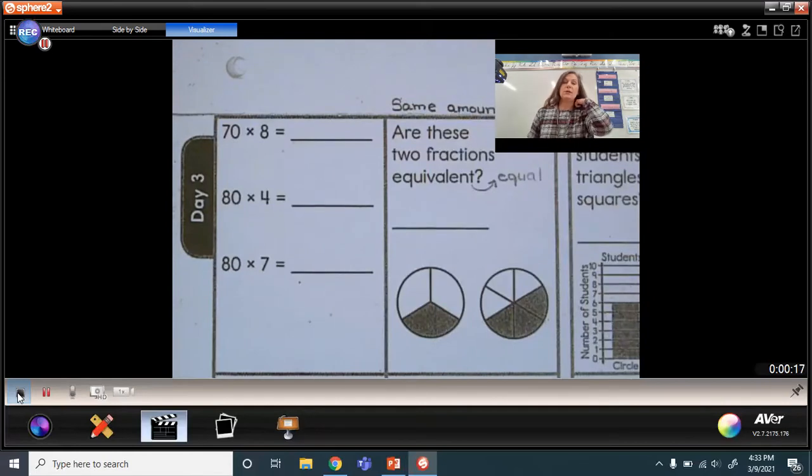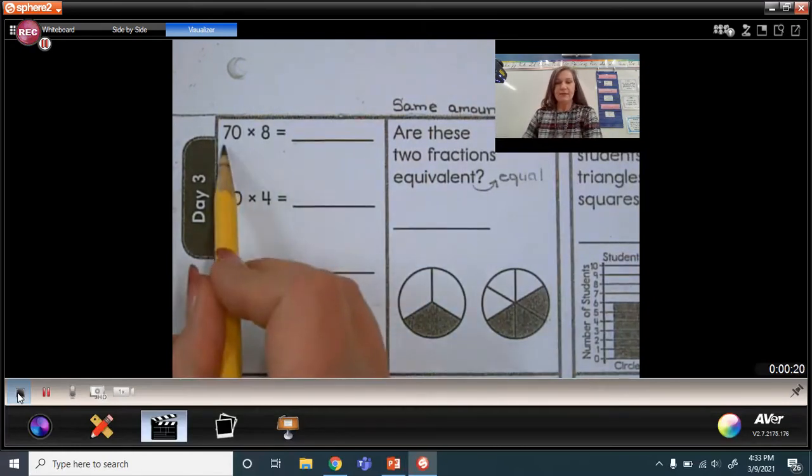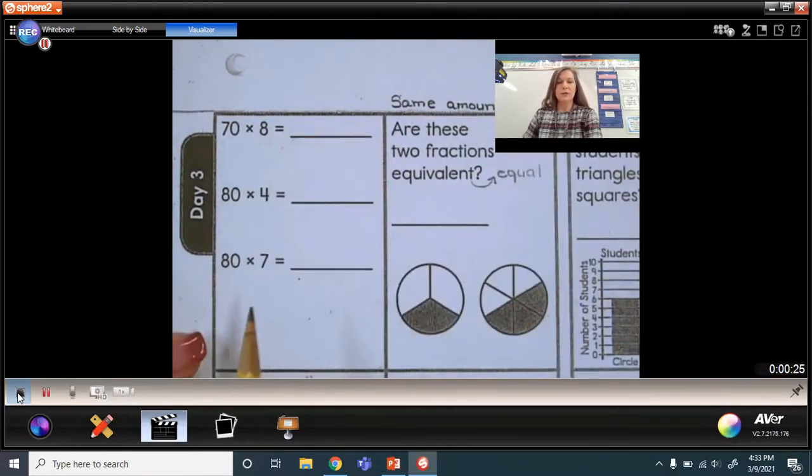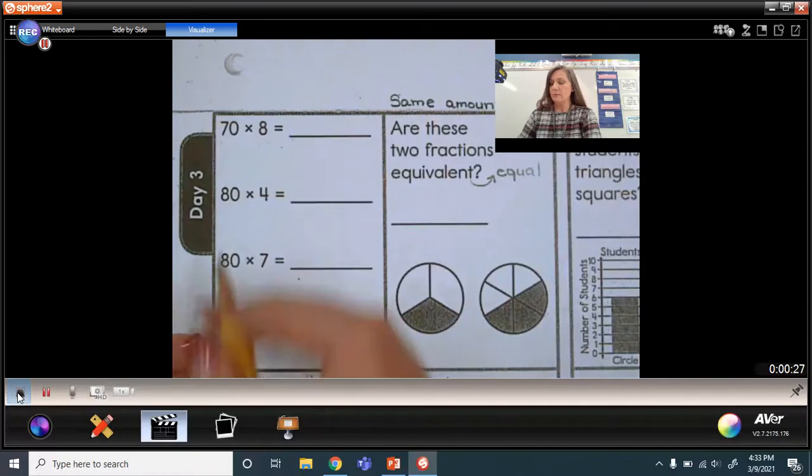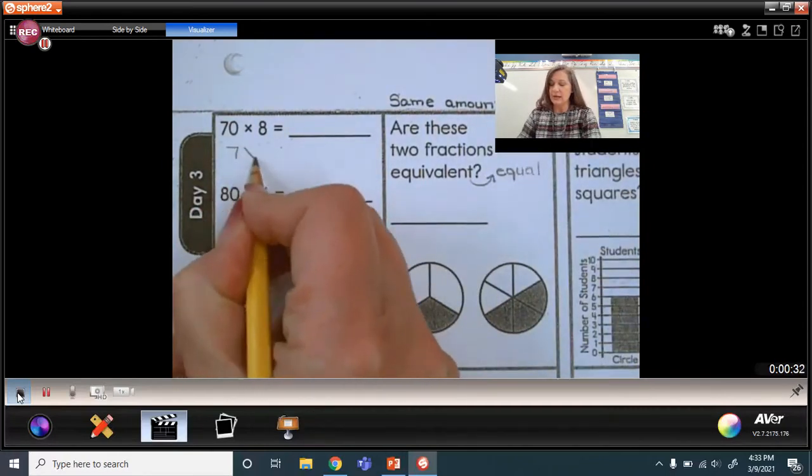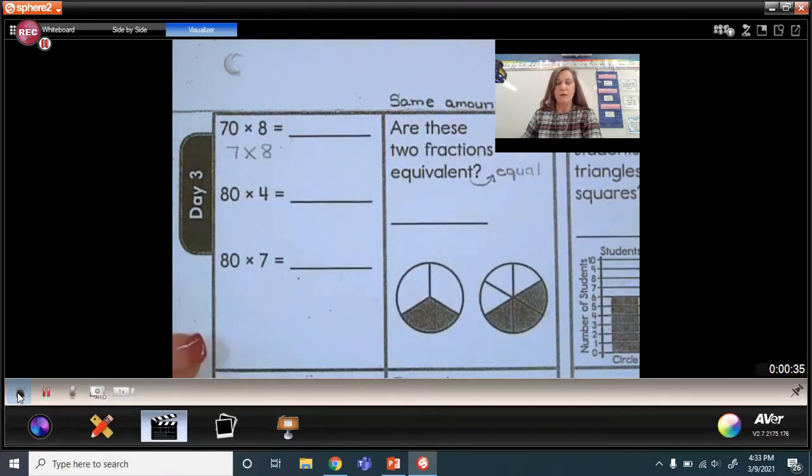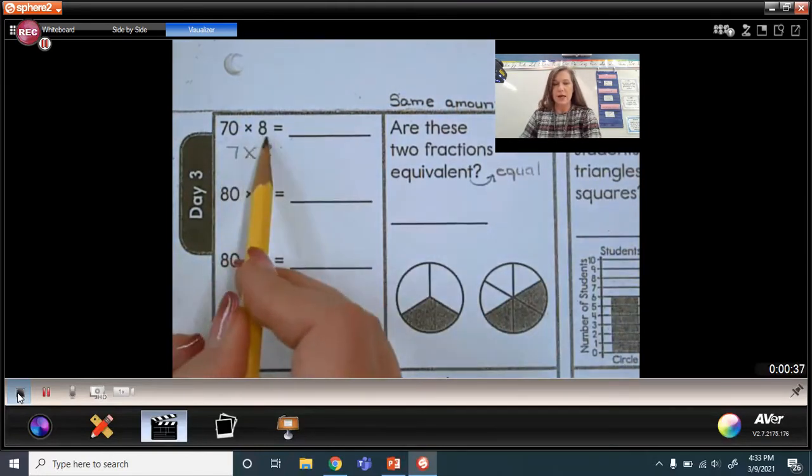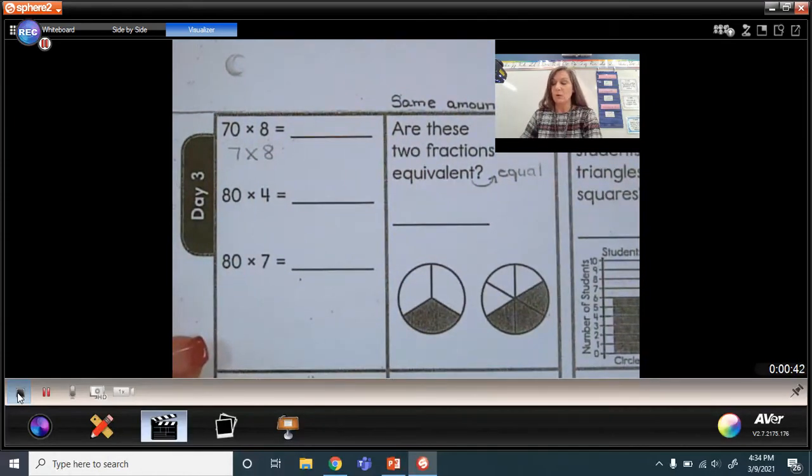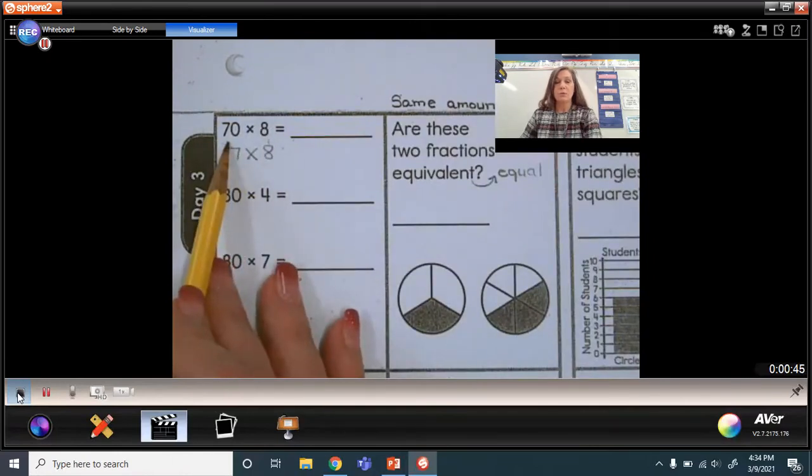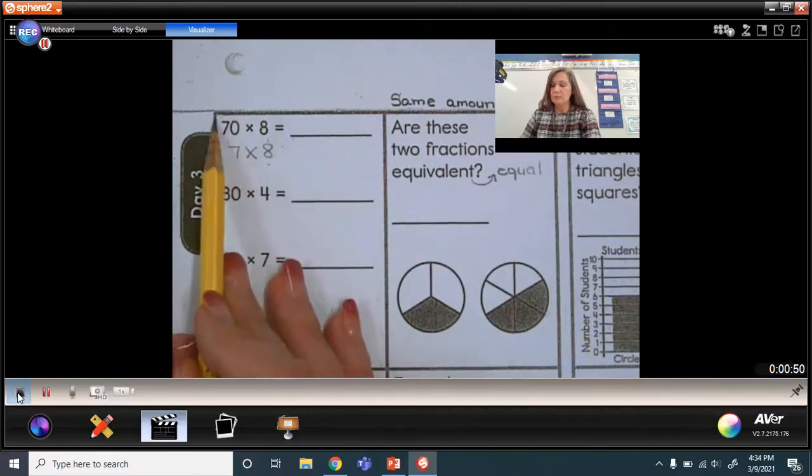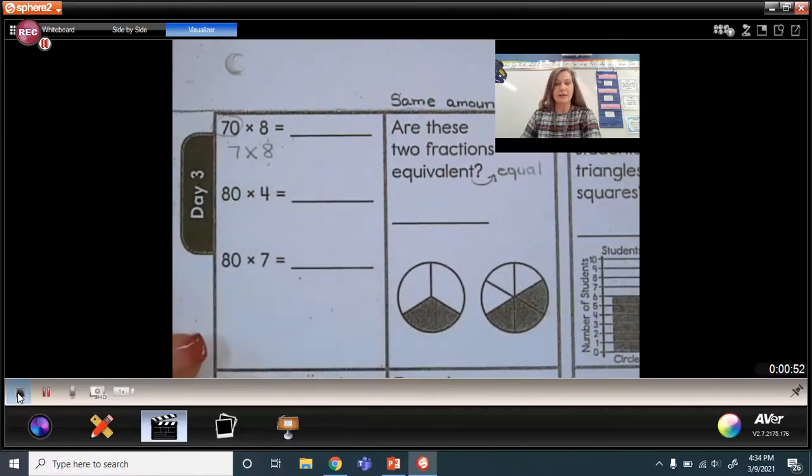So if you notice, the first problem is 70 times 8. Now, if you don't remember, it's been a while, but we talked about using the basic fact of 7 times 8 to help us solve for 70 times 8. It would take a really long time to add 70 groups of 8 or 8 groups of 70. So let's talk about how we can use this basic fact to help us with this multiple of 10 factor.